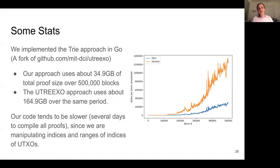So some stats. To test these ideas in practice, we implemented the trie approach in Go as a fork of the utreexo project. And we found that our approach uses about 35 gigabytes of total proof size over the course of 500,000 blocks taken from the Bitcoin blockchain, whereas the utreexo approach uses about 164 gigabytes over the same period. So there is some improvement in the proof size using this trie scheme.